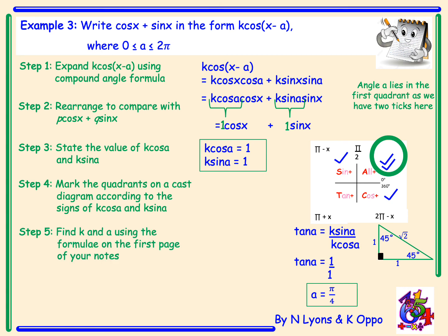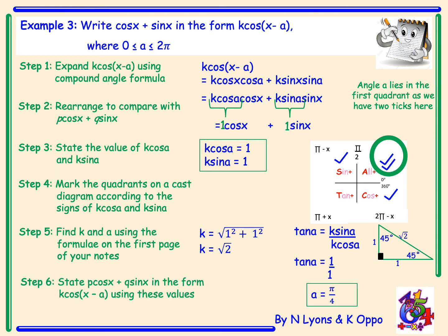Finally, we find the value of k: the square root of 1 squared plus 1 squared, so k equals root 2. The last step is to write cos x plus sin x in the form k cos of x minus a. So cos x plus sin x equals root 2 cos of x minus pi over 4.